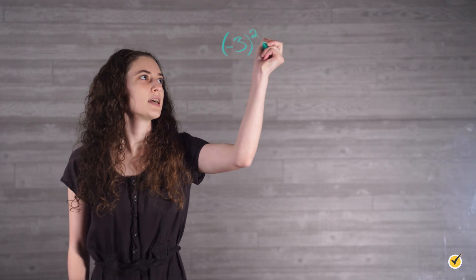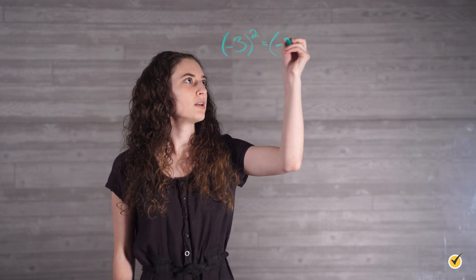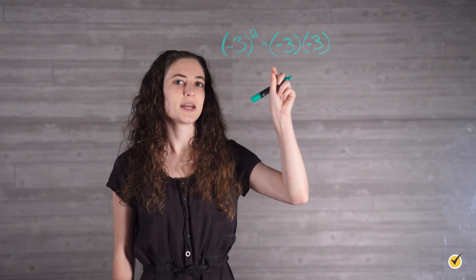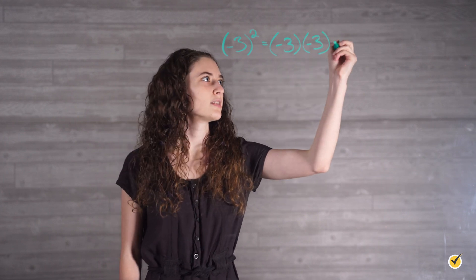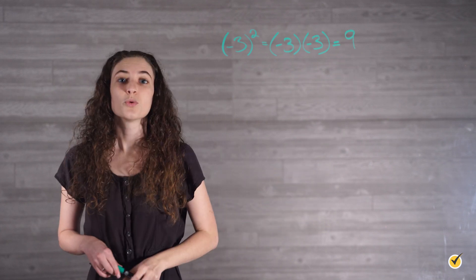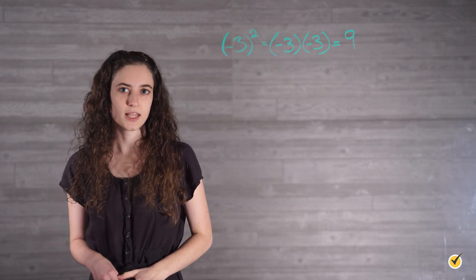Another important fact to remember about exponents is that if you put a negative number to an even power, the answer will be positive. For instance, negative 3 squared is the same as multiplying negative 3 times negative 3. And when you multiply a negative times a negative, that gives you a positive answer of 9. This will be very important to our solutions later.